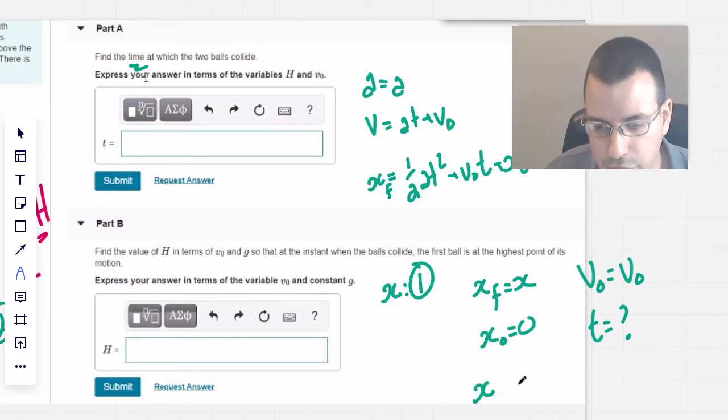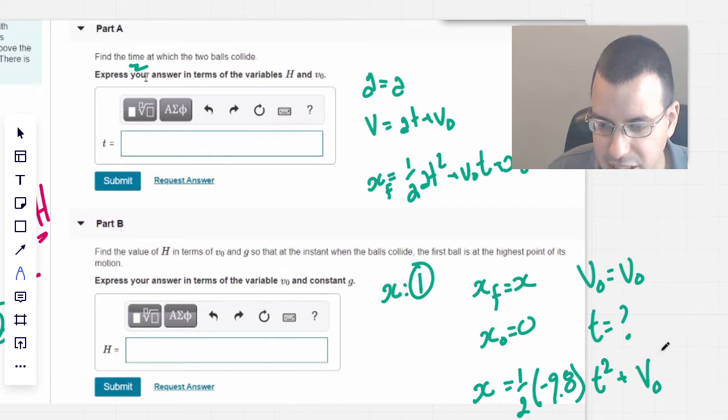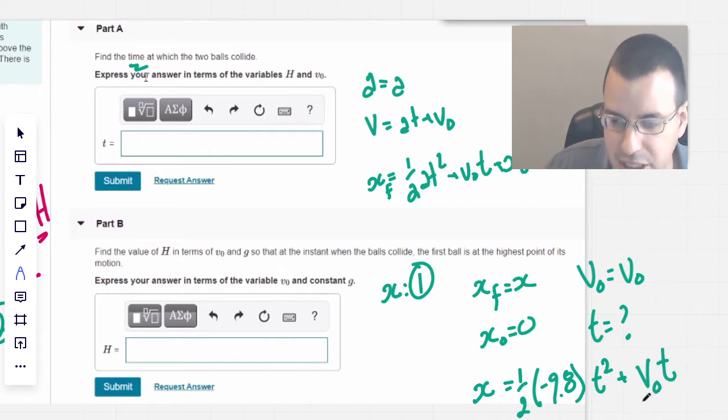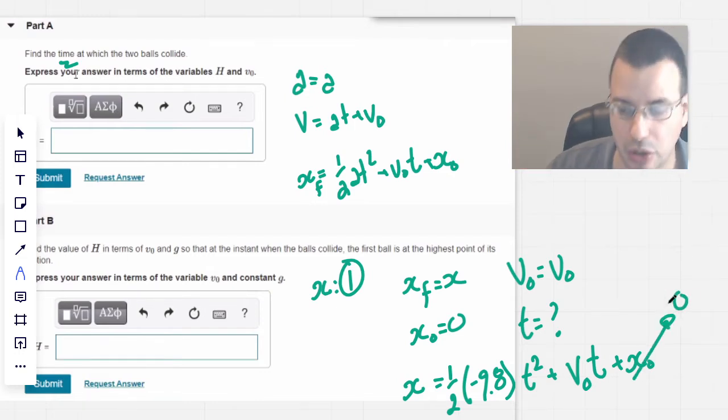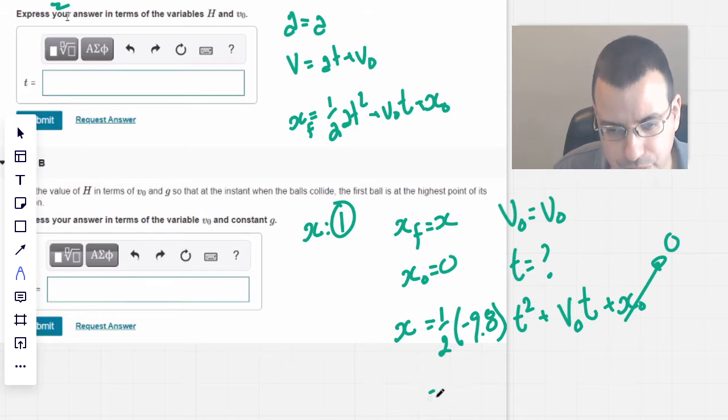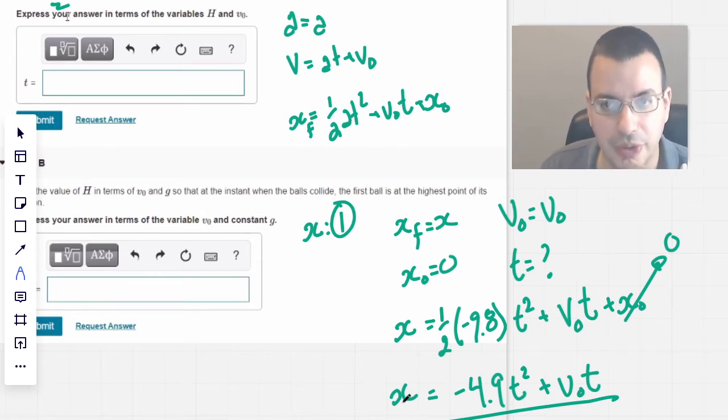So this is the one that starts from the ground. So position X where they finally collide is one half times acceleration, which is gravity, which I'm going to say is negative 9.8 times T squared plus V0 T. So initial position times T plus X0, its initial height. Its initial height is going to be zero. So I'm going to rearrange this real quick. So one half times 9.8 is going to be negative 4.9 T squared plus V0 T. So this is our equation from the first ball. The point where they collide, gravity, and speed.